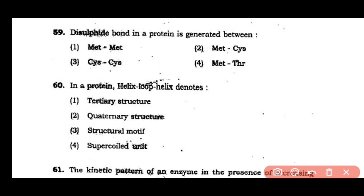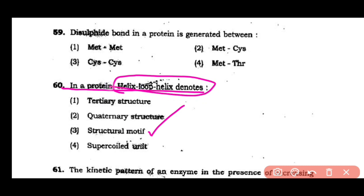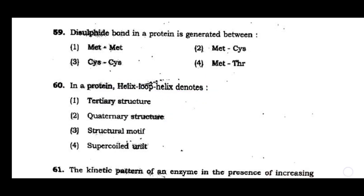Question number 60: In a protein, helix-loop-helix denotes tertiary structure, quaternary structure, structural motif, or supercoiled units. The correct answer is option 3 — helix-loop-helix in a protein denotes a structural motif.